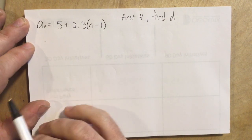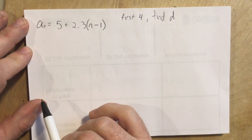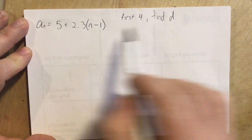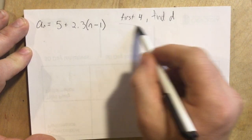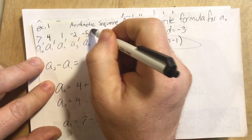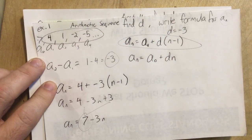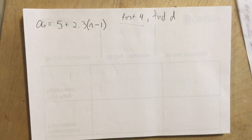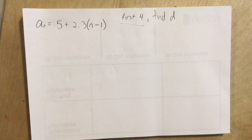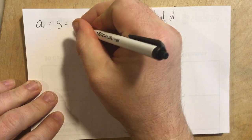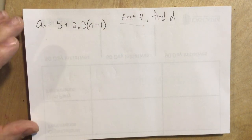Second and last example for arithmetic sequences is going to be this one. So here they give us the formula a_n. They want us to find the first 4. And you'll notice right after we do that, it'll look an awful lot like what was given here. So almost the same problem. And then they want us to find d. And this is 2.3.